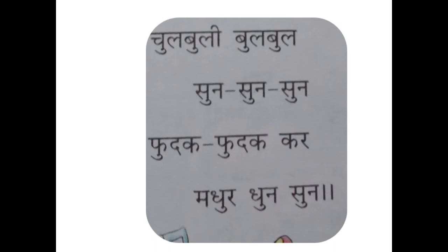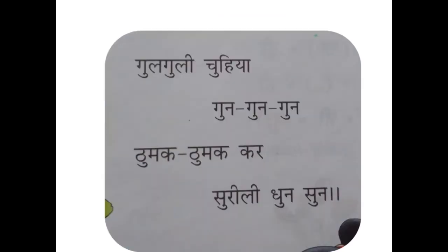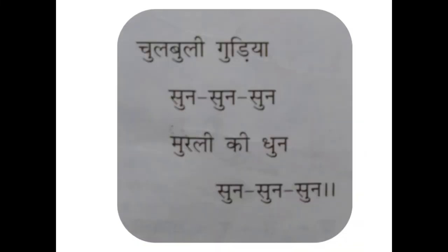The second stanza is 'Gulbuli chukhiya gun gun gun gun' — 'chukhiya' means mouse, so it's the dumpling mouse. 'Tumak tumak kar surli dun sun' means listen listen to the whisper, and the dancing mouse listens to the melodious tune. That is what the second stanza is all about.